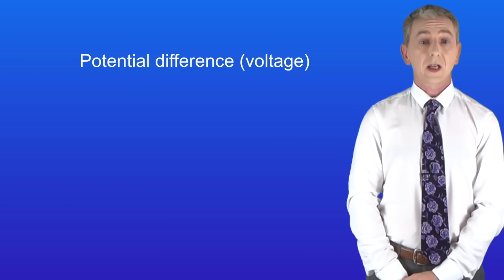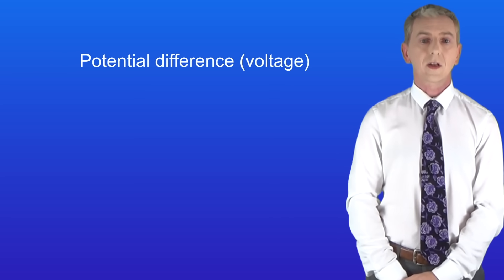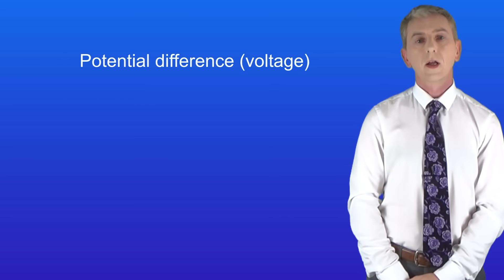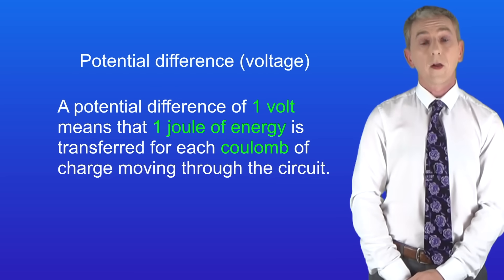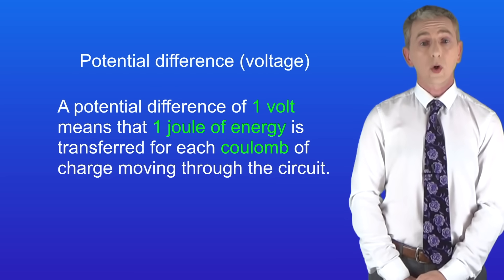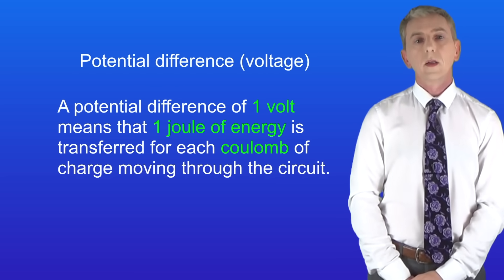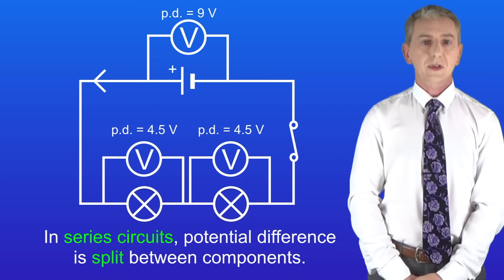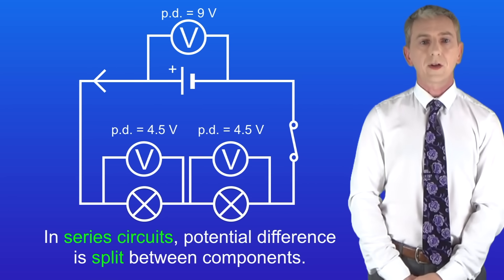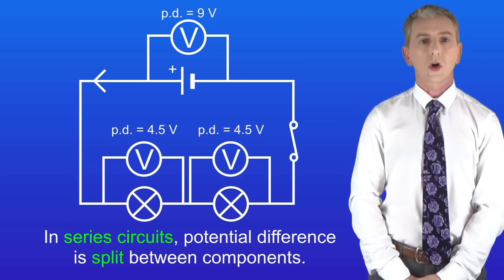In the last video we saw that potential difference tells us about energy transfers taking place in a circuit. A potential difference of one volt means that one joule of energy is transferred for each coulomb of charge moving through the circuit. So in this series circuit we can see that the cell has a potential difference of nine volts — in other words the current is carrying nine joules of energy per coulomb of charge.